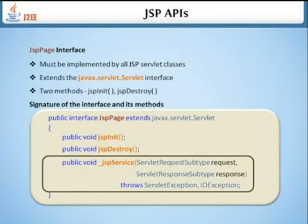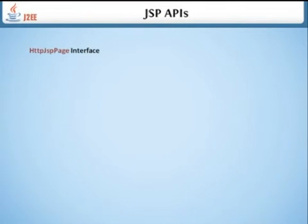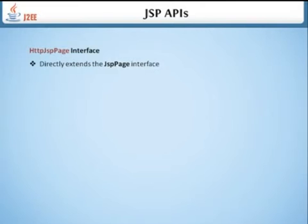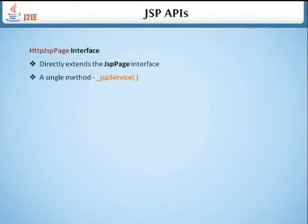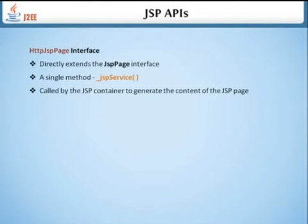The HttpJspPage interface directly extends the JspPage interface. It has a single method, _jspService, which is called by the JSP container to generate the content of the JSP page. This is a container-generated method and cannot be included manually in a JSP page.